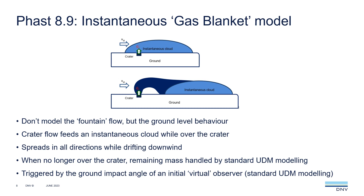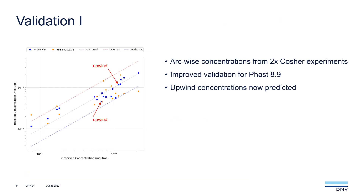We apply this gas blanket model when we expect a steeply descending plume. How do we predict that? We do it by running an initial virtual observer using standard UDM modelling and the initial conditions from the crater. We trigger the gas blanket if the touchdown angle predicted by that initial run is more than 45 degrees below the horizontal.